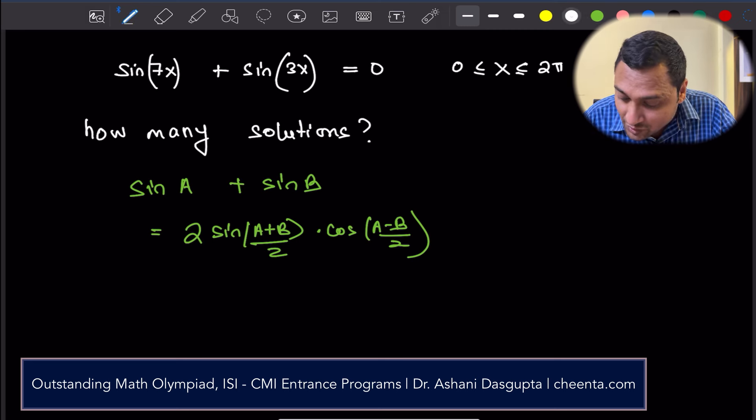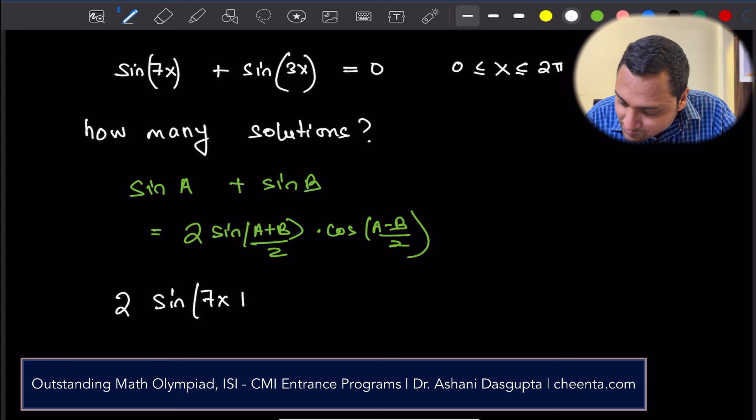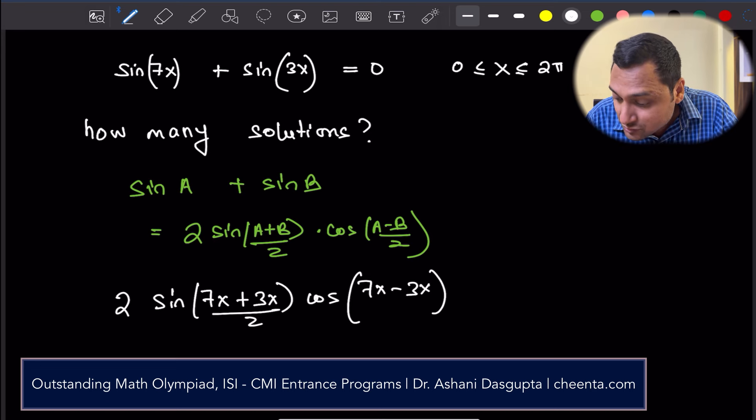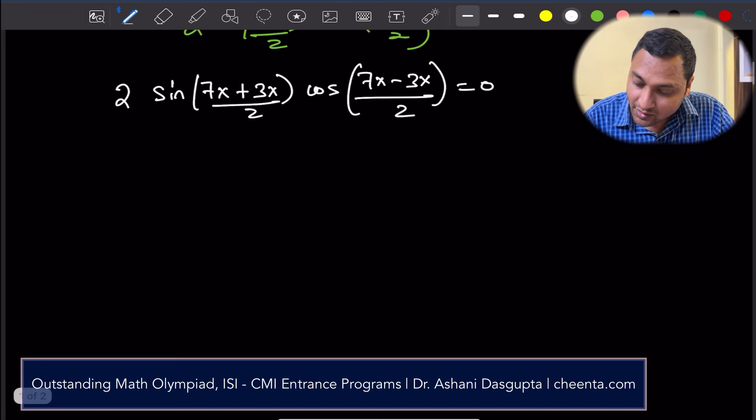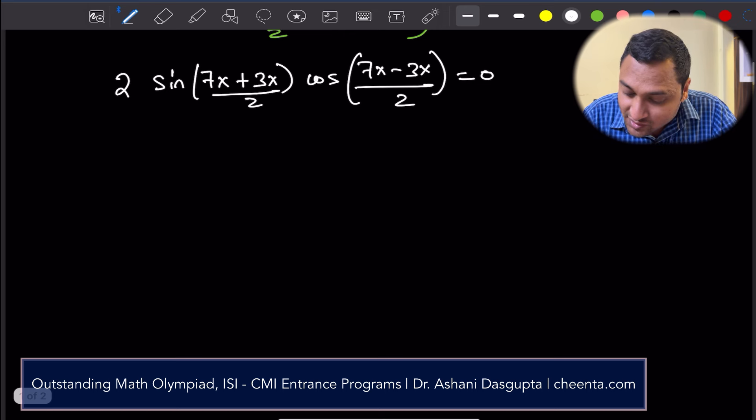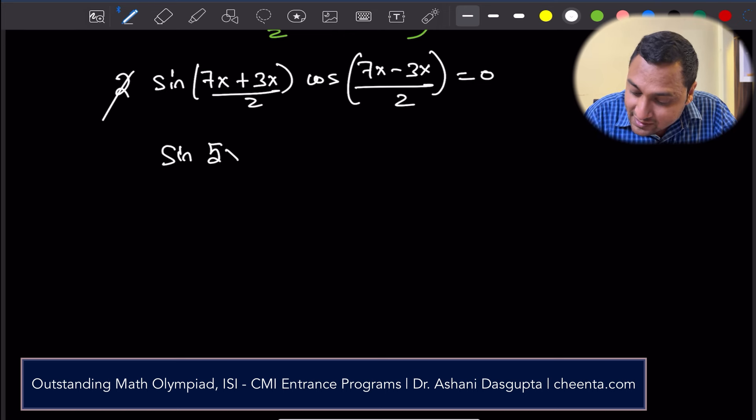We will directly apply this formula though. In this particular case, this is 2sin((7x+3x)/2)cos((7x-3x)/2) = 0. We want to solve this equation. So 2 cancels off. So this is sin(5x)cos(2x) = 0.